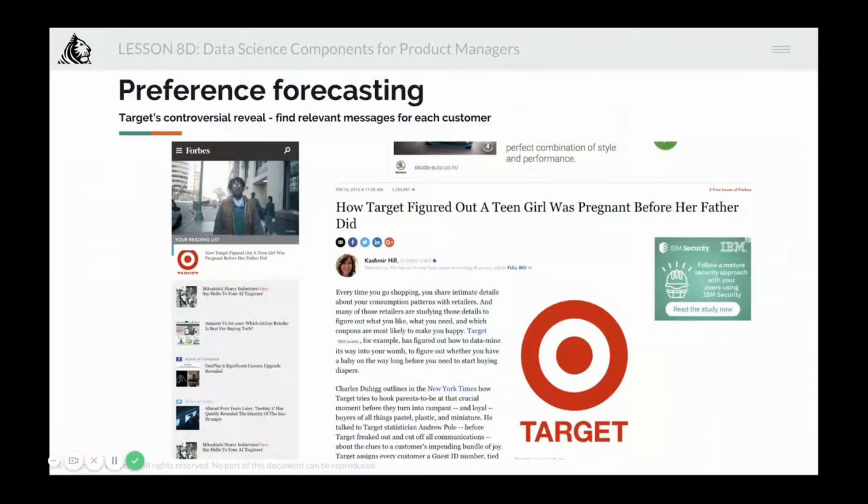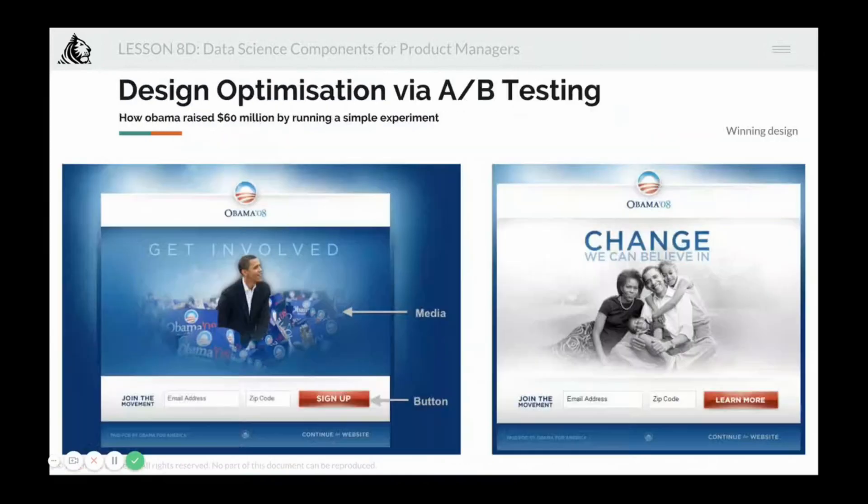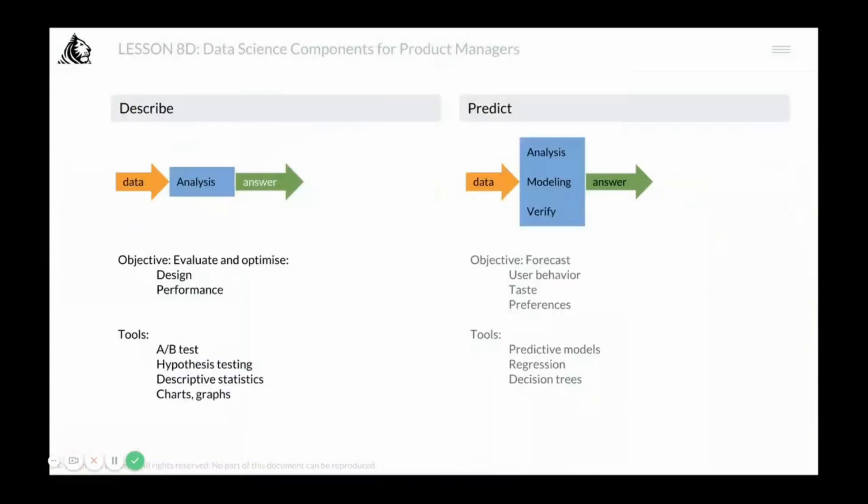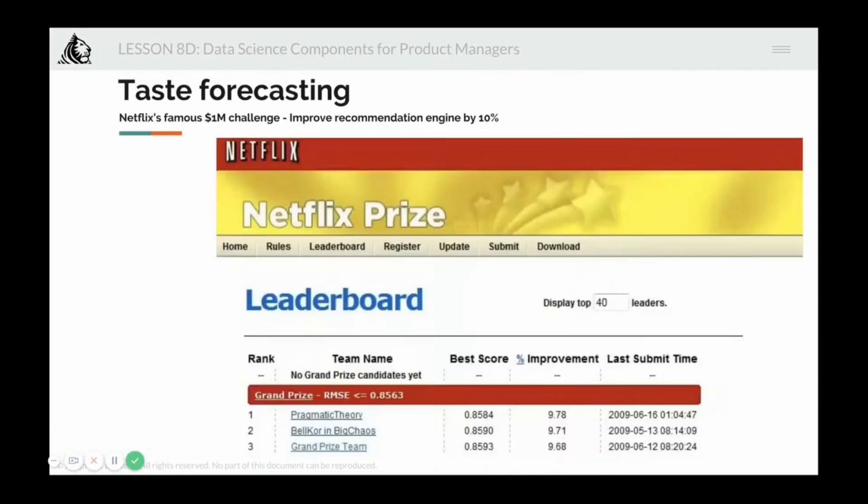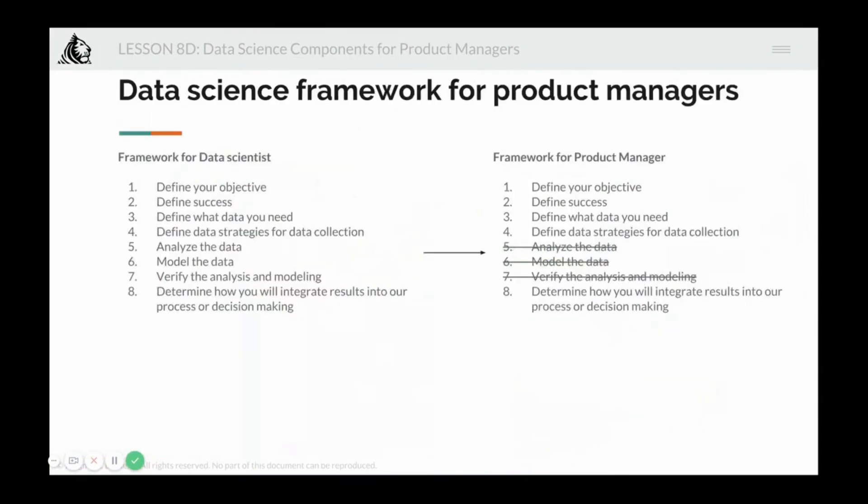So all of these three things, which is preference forecasting, taste forecasting, and design optimization by A-B testing, all of these are possible via the tools at your disposal with descriptive analytics or predictive analytics.